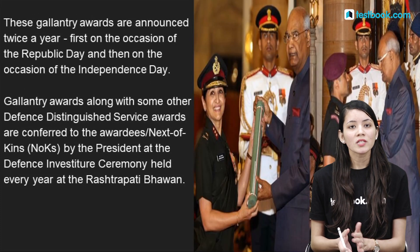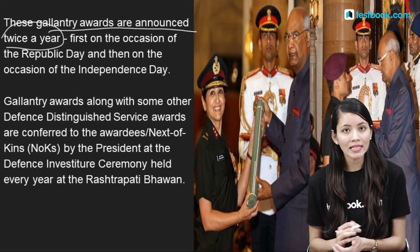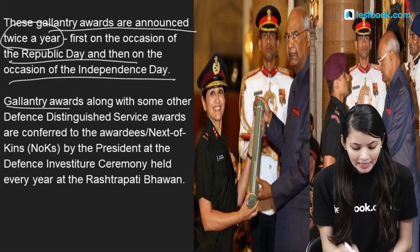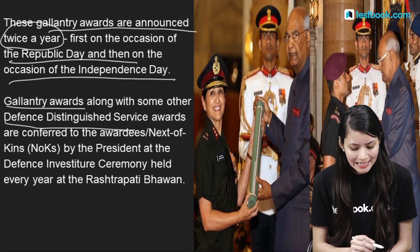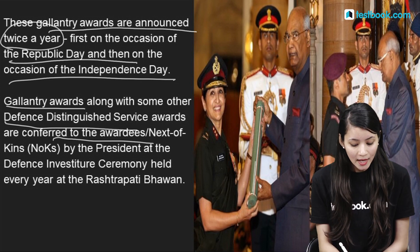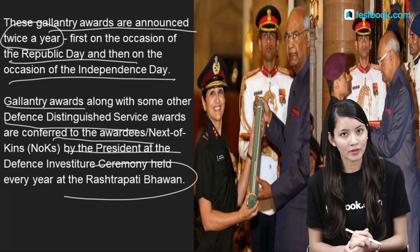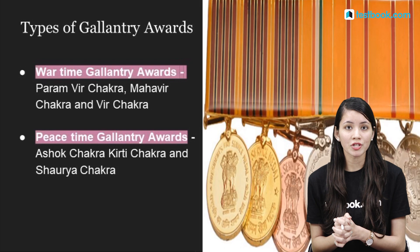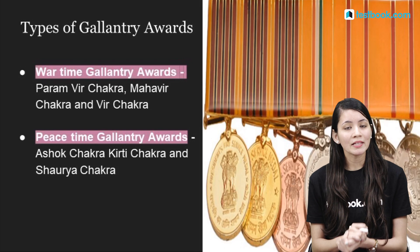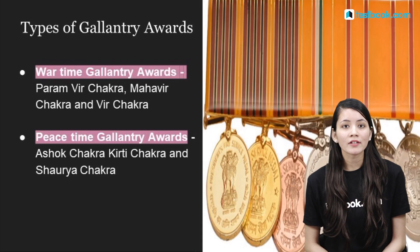These Gallantry Awards are announced twice a year — first on the occasion of Republic Day and second on the occasion of Independence Day. Gallantry Awards and some Defence Distinguished Service Awards are conferred to the awardees and their next of kin by the President at the Defence Investiture in the Rashtrapati Bhavan. However, Param Vir Chakra and Ashok Chakra awardees and their next of kin are awarded by the President of India on Republic Day at Rajpath.